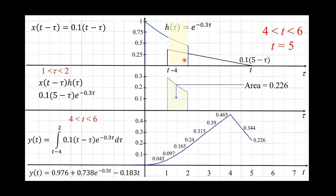When t is 5, the overlap area where the input and the impulse response overlap goes from t minus 4 to 2. Integrating gives the output. At t=5, the system doesn't see any more new input — the input was 4 hours long, so now we are in the 5th hour. The system is outputting energy stored in it due to past input.